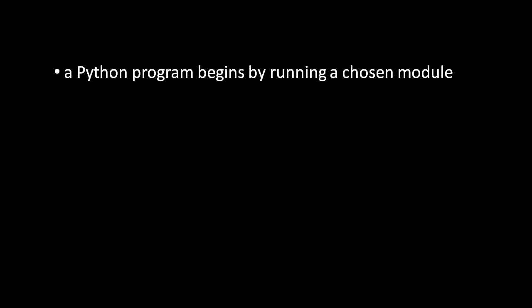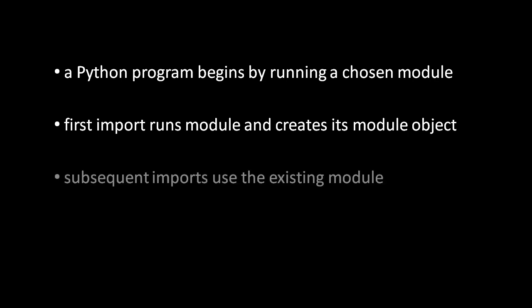When we start the Python interpreter, we need to specify one module for the interpreter to run. And that module runs, and in course of doing so, it may import other modules, thereby causing them to run. It may happen, though, that a single module needs to get imported by multiple other modules. And so in the course of running, a single module may end up imported more than once. When this happens, though, the interpreter will only actually execute the module the first time it is imported. For all subsequent imports, that import simply uses the existing module object.